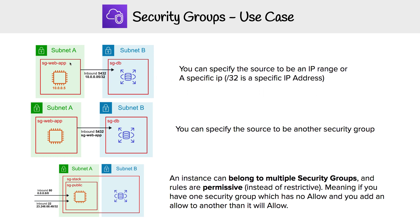In the first case, what we're doing is we have an inbound rule on the database security group allowing anything from port 5432, which is the Postgres port number, for this specific IP address. So it allows the EC2 instance to connect to that RDS database. The takeaway here is you can specify the source to be an IP range or a specific IP — in this case it's a /32, which is a nice way of saying exactly one IP address.